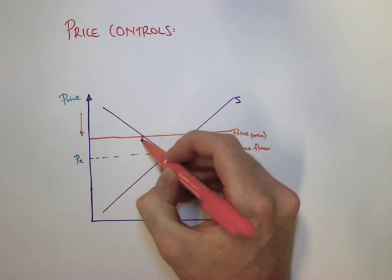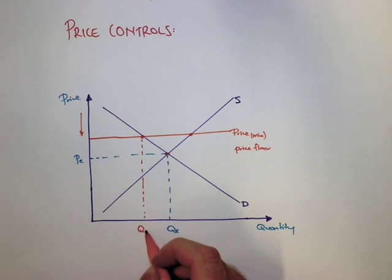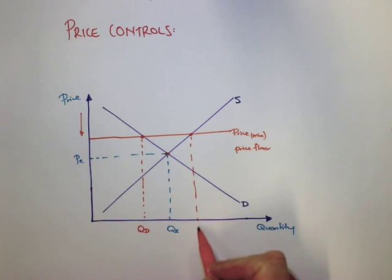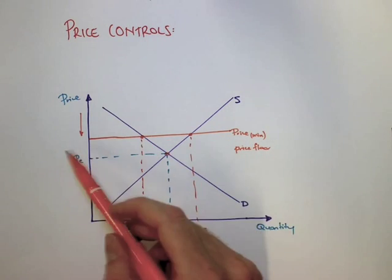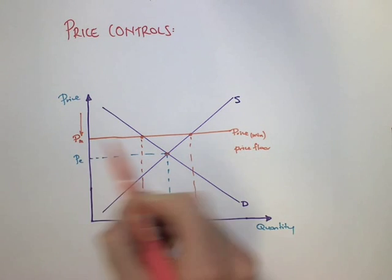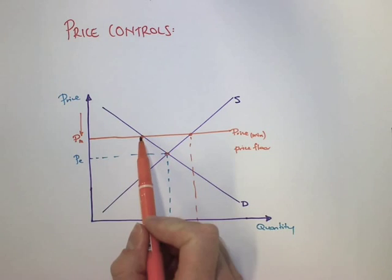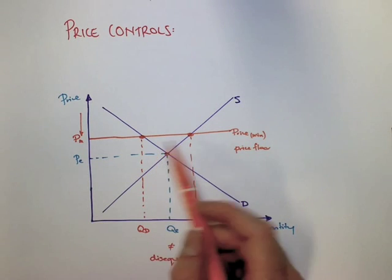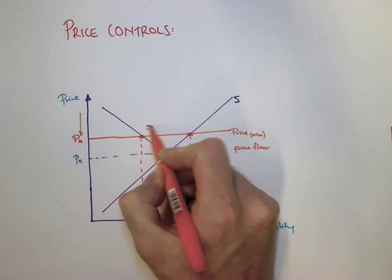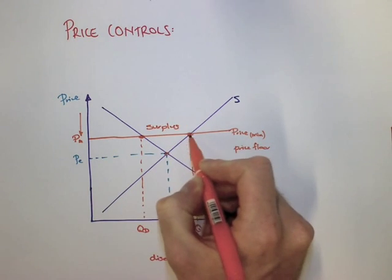If the price is set at this level, you get something called a disequilibrium. At this disequilibrium, you have the quantity demanded and the quantity supplied, and whenever these two things don't equal each other, we call this a disequilibrium. At this market price, the quantity demanded is less than the quantity supplied, so there's a surplus of products, more being sold than there is being demanded.